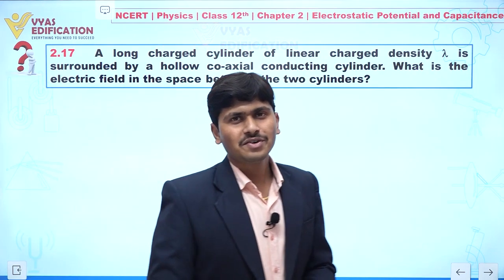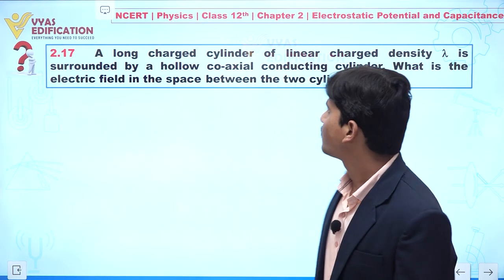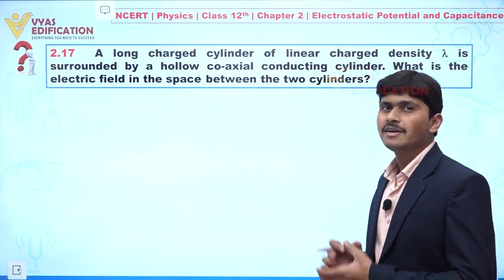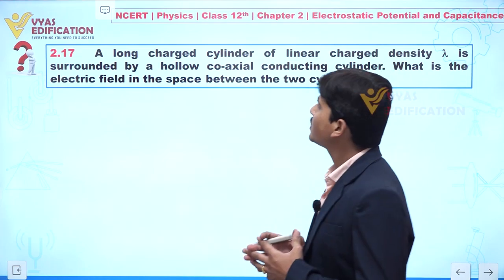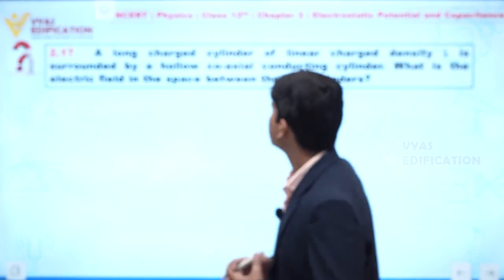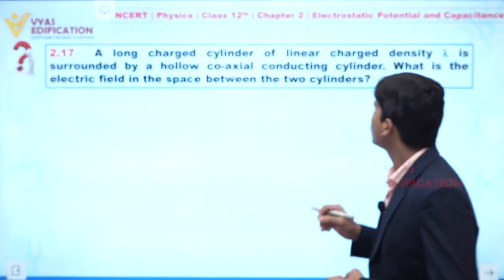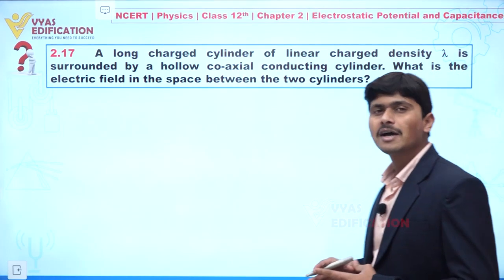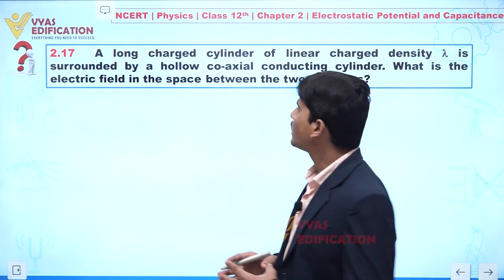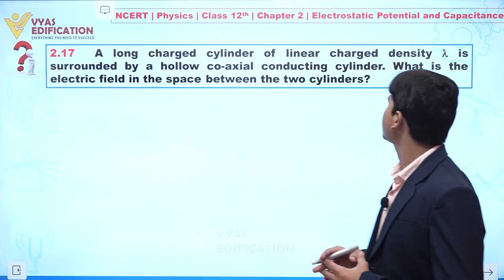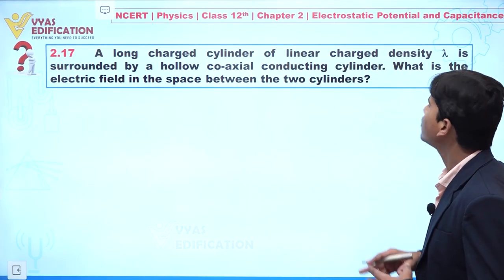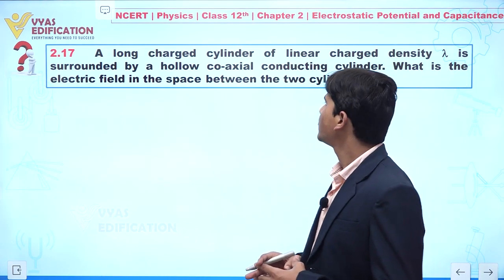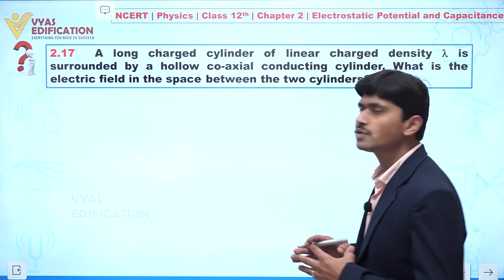Dear student, we are going to discuss question number 2.17. In this question, a long charged cylinder of linear charge density lambda is surrounded by a hollow coaxial conducting cylinder. What is the electric field in the space between the two cylinders?